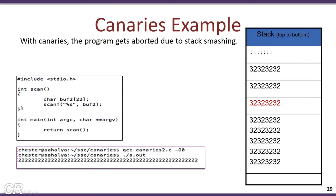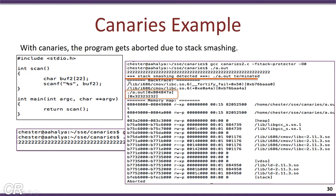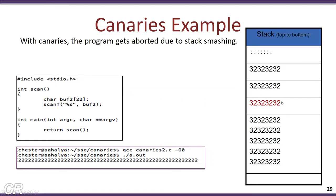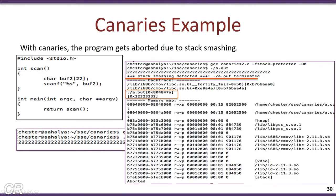When the scan function returns, the compiler-added code detects whether the canary value has changed. As a result, you get an output showing 'stack smashing detected' and the program is terminated. The program terminated at location 0x804847A and the modified canary value was 0x32, 0x32, 0x32, 0x32, 0x32 — exactly what was written onto the stack due to the buffer overflow. The stack smashing detection output also provides the memory map of the program at the point of termination.